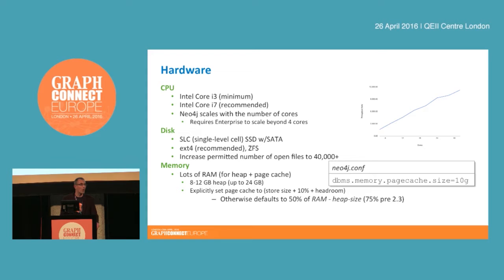With regard to disk, we're always making data durable on disk and we prefer SSD over hard disk. We recommend using SLC — single-level cell — SSDs rather than the consumer multi-level cell versions available today. You'll get better performance using SLC with SATA rather than using consumer-level SSDs.